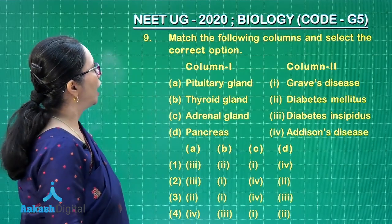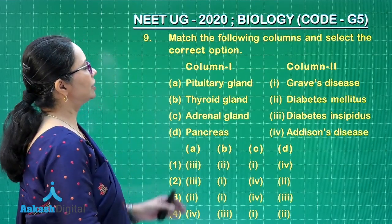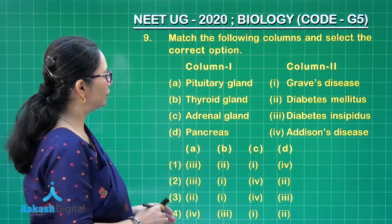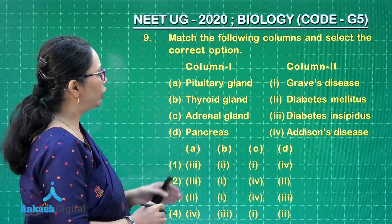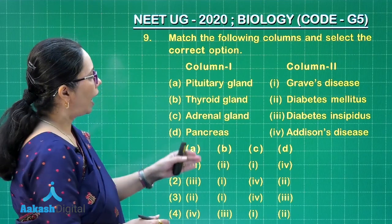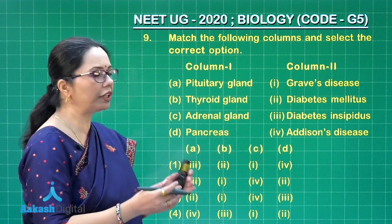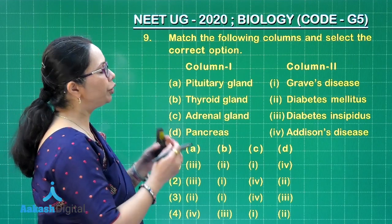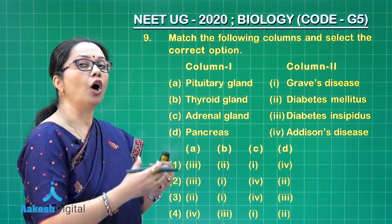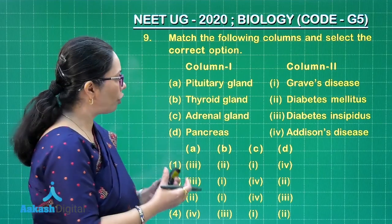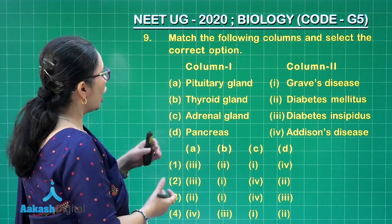Question 9: match the following columns and select the correct option. Here you can see the names of the endocrine glands are mentioned, and certain diseases are mentioned which would be due to either hypersecretion or hyposecretion of one of the hormones secreted by these glands.